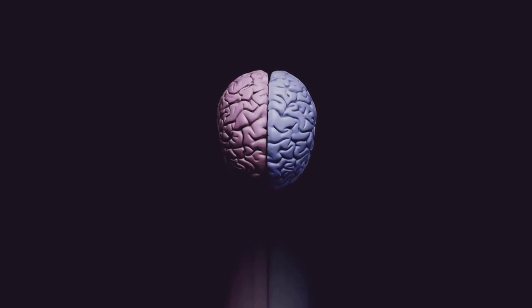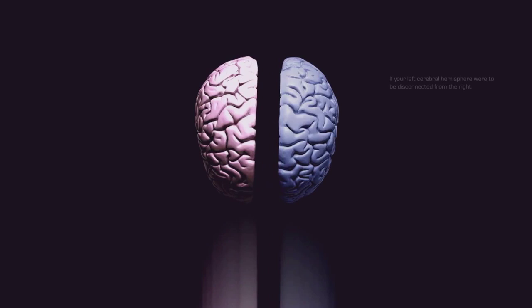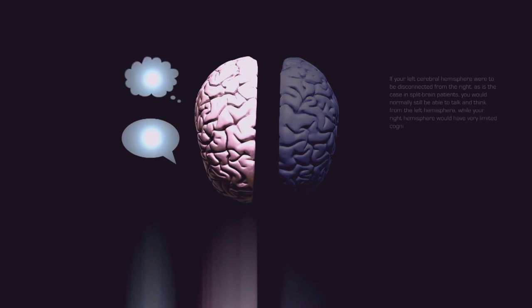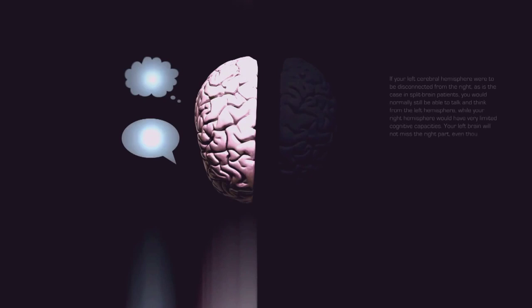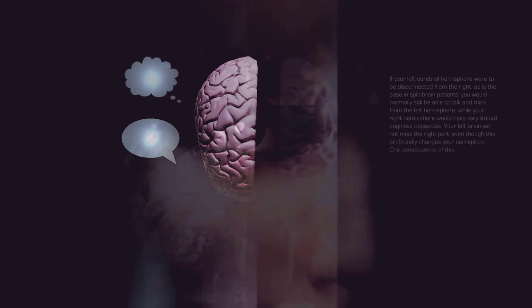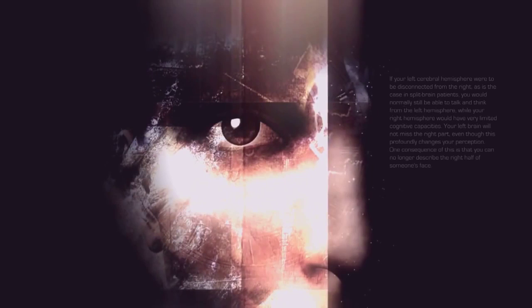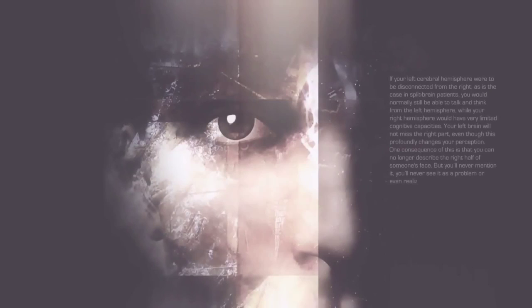If your left cerebral hemisphere were to be disconnected from the right, as is the case in split brain patients, you would normally still be able to talk and think from the left hemisphere, while your right hemisphere would have very limited cognitive capacities. Your left brain will not miss the right part, even though this profoundly changes your perception. One consequence of this is that you can no longer describe the right half of someone's face, but you will never mention it. You will never see it as a problem or even realize that something has changed. Since this affects more than just your perception of the real world and also applies to your mental images, it is not just a sensory problem, but a fundamental change in your consciousness.